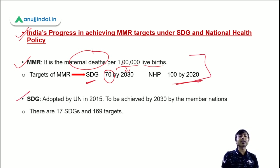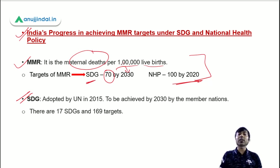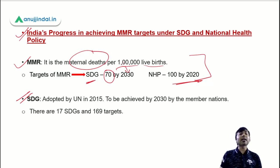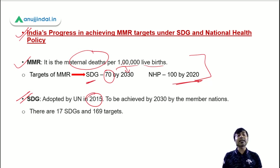Sustainable development goals are a collection of 17 goals designed to achieve a better and sustainable future for all. These goals were adopted at the United Nations in the year 2015 and are to be achieved by the year 2030. Along with the 17 goals, there are also 169 targets.